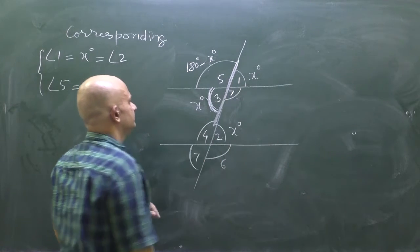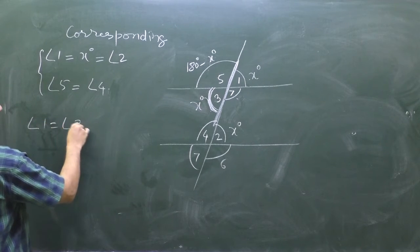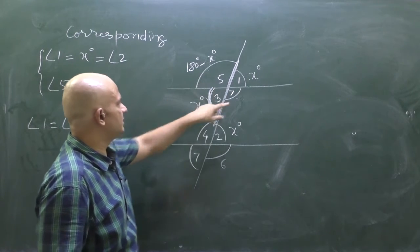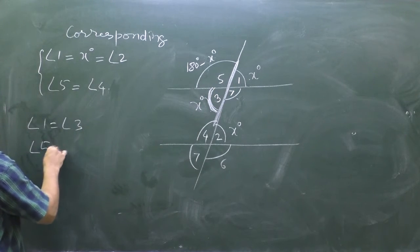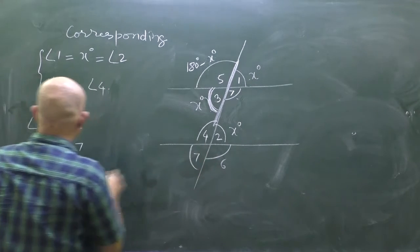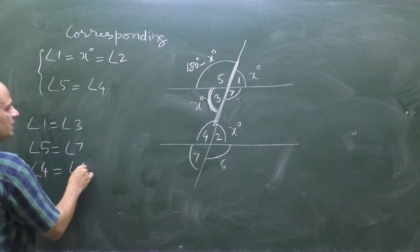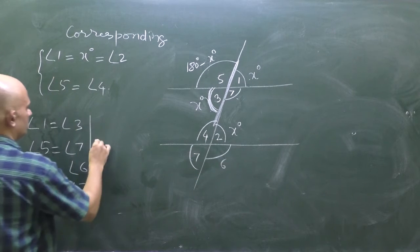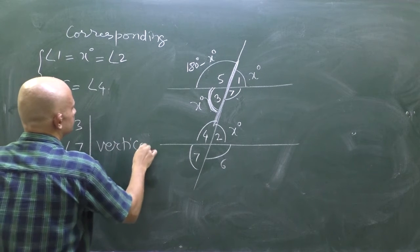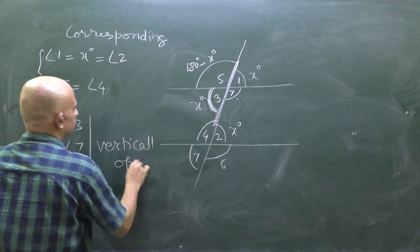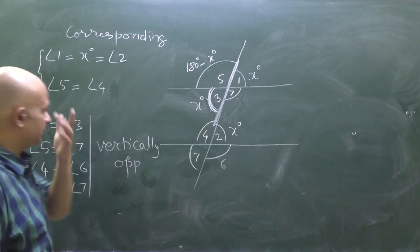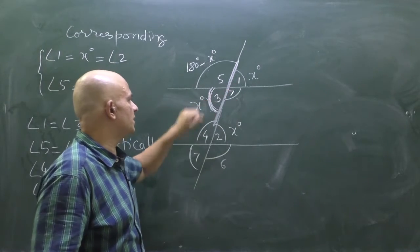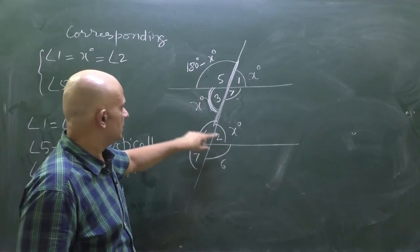Angle 1 equals angle 3 — these are vertically opposite angles. Angle 2 equals angle 7 — these are also vertically opposite angles, both equal to x degrees.